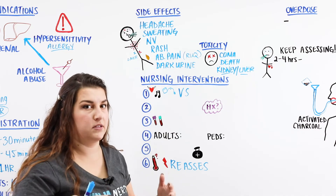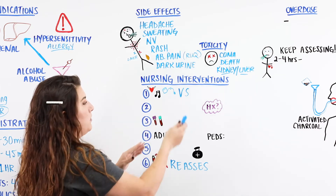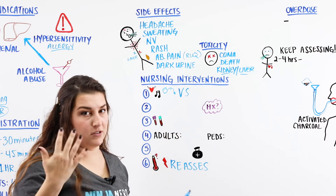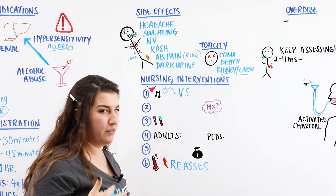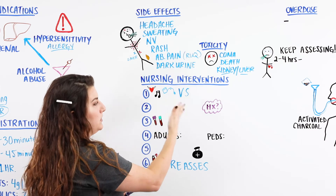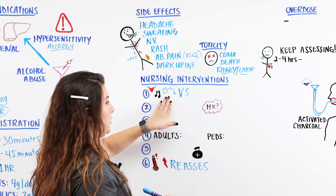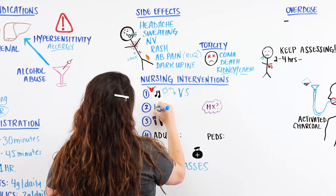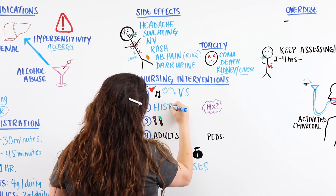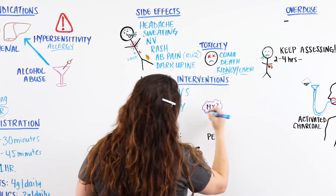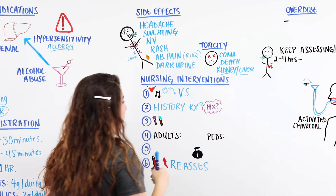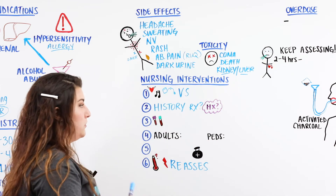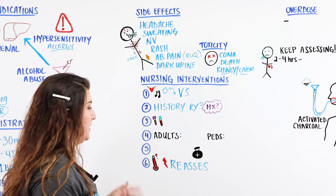Pain or fever often comes secondary to something else, like an infection. If a patient's chest X-ray looked clear yesterday but is now looking cloudy, they may be developing pneumonia. We want to make sure we're always assessing and reassessing to confirm the medication is working. Also ask whether the patient has any history of reaction to Tylenol or any history of kidney or liver problems.